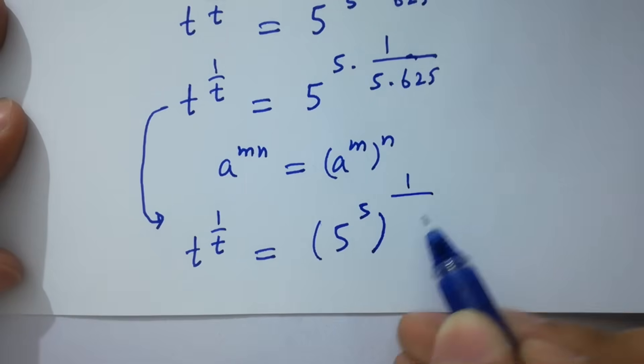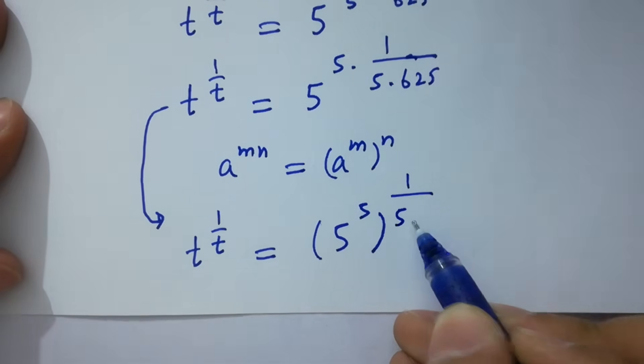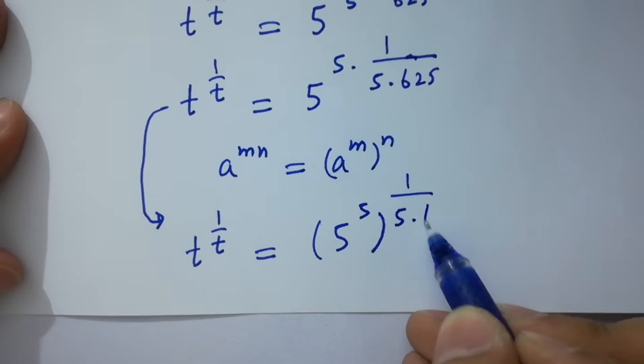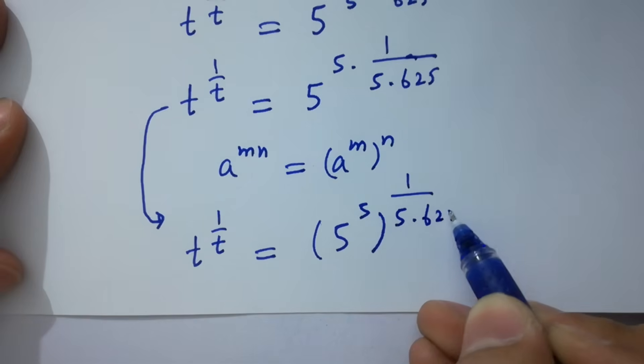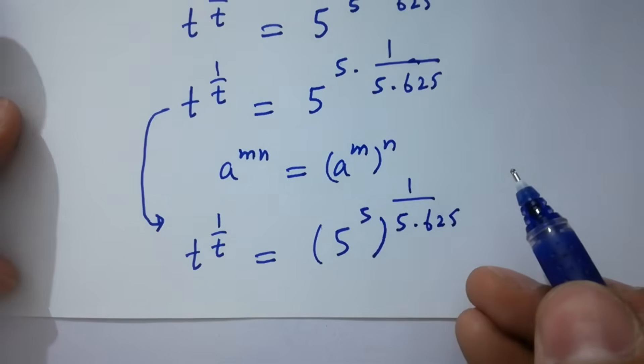This gives us 1 over 5 to the power 5, which we will simplify in the next step.